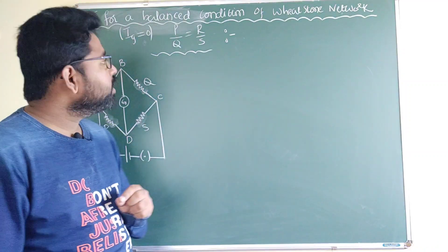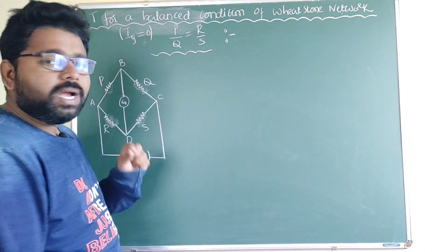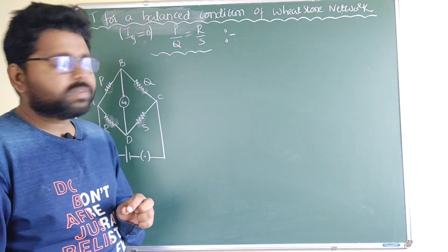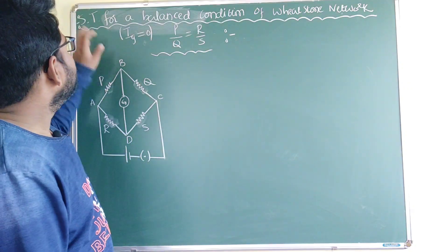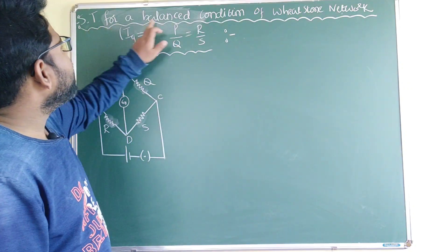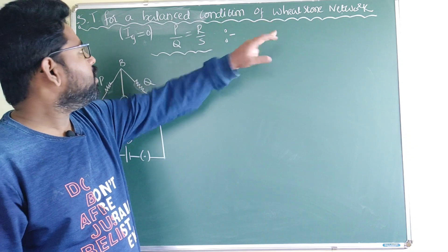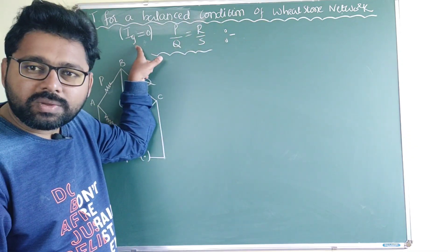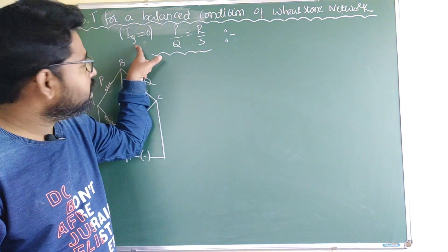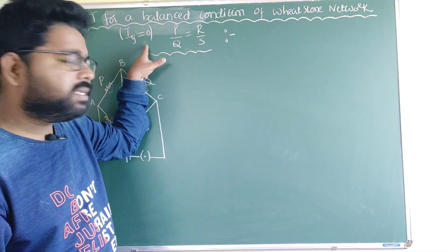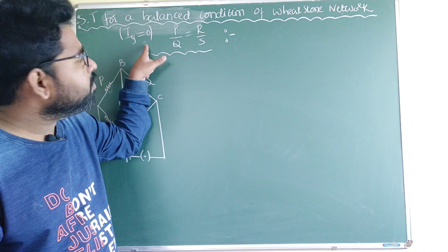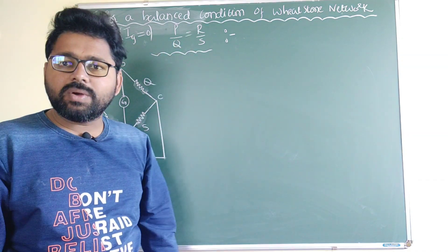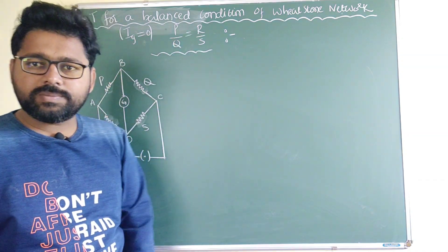Now we are going to derive the balanced condition of the Wheatstone network. That is, if the current passing through the galvanometer is equal to zero — Ig = 0 — we are going to show that P/Q = R/S.